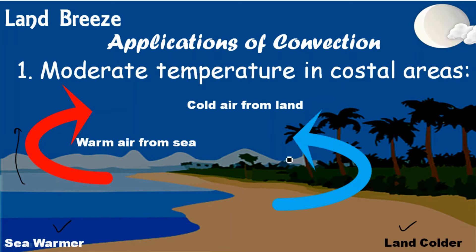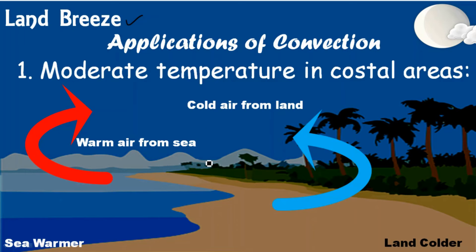Warmer air from the sea moves toward the colder air of the land, pushing the colder land air toward the sea. This convection current maintains moderate temperature at night as well. During the day, this movement is called sea breeze, and during the night it is called land breeze.